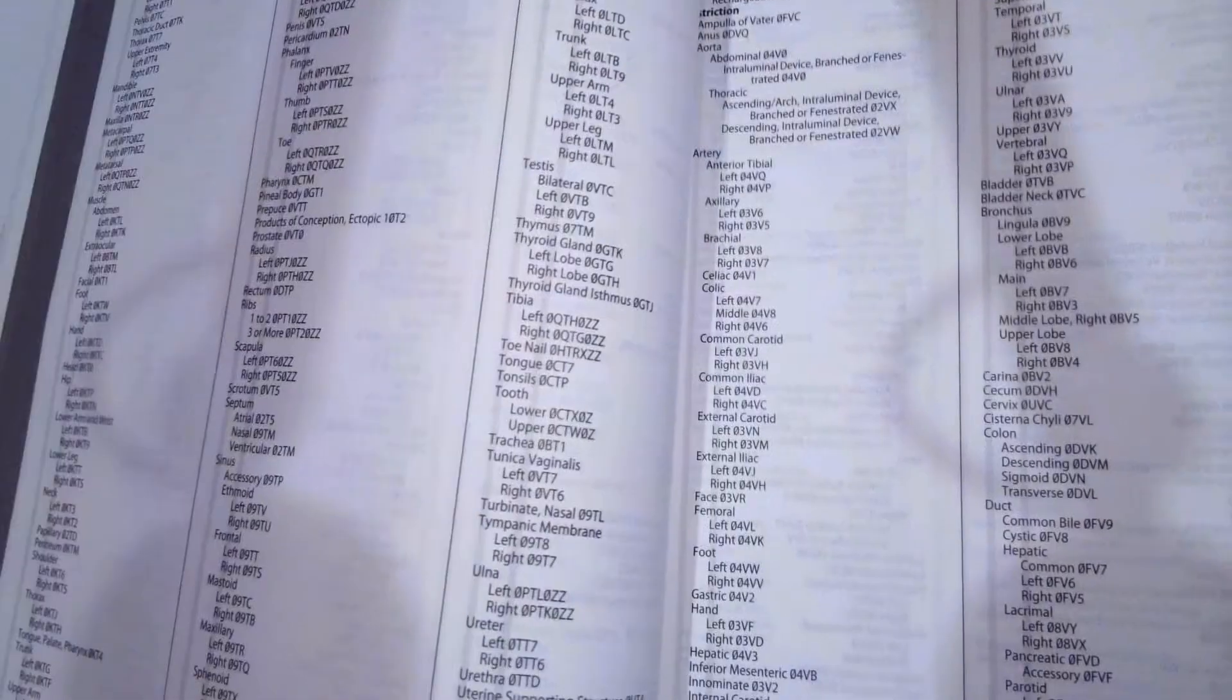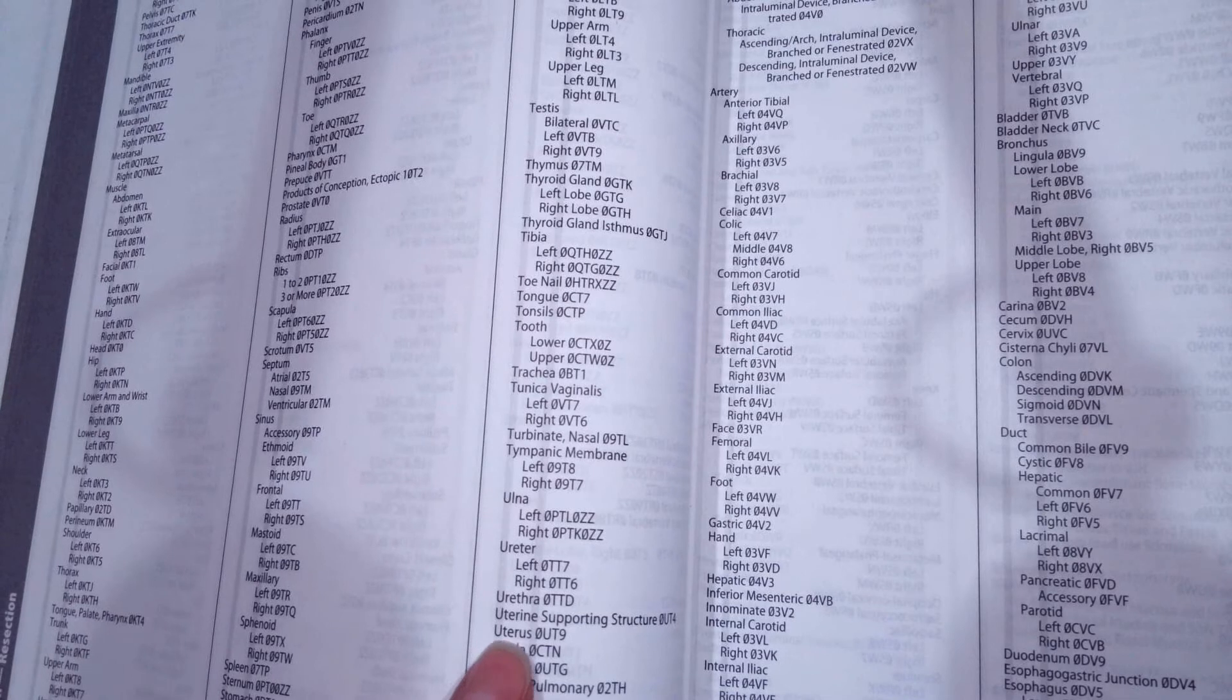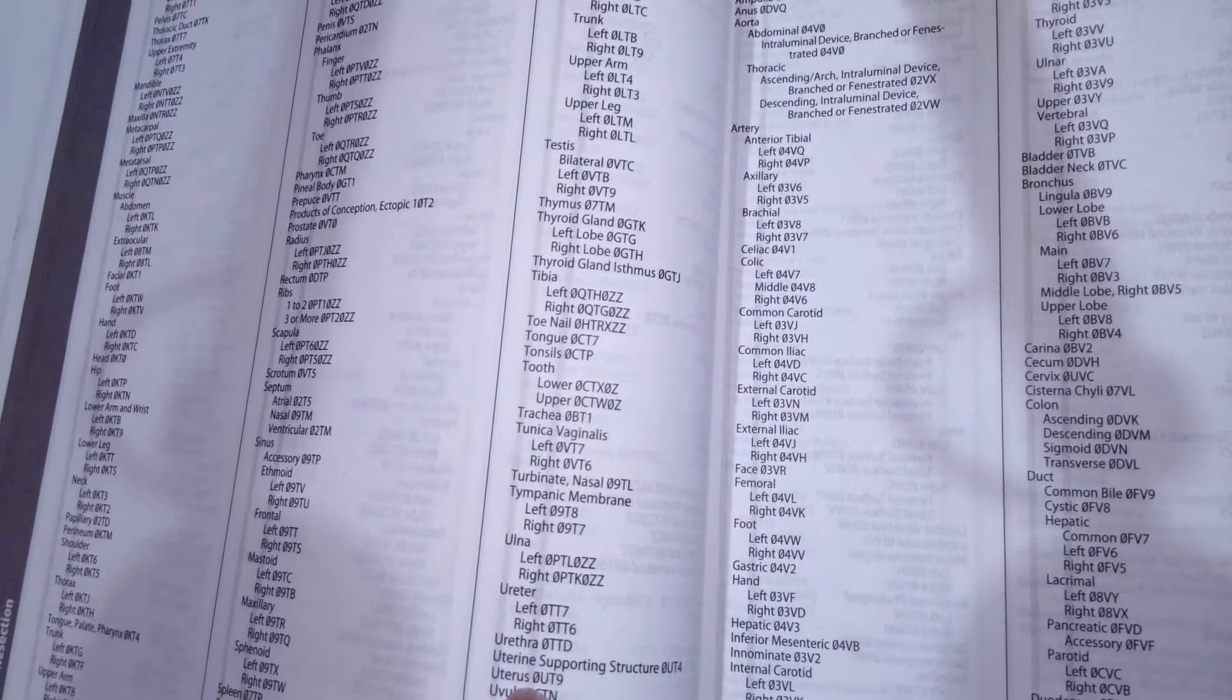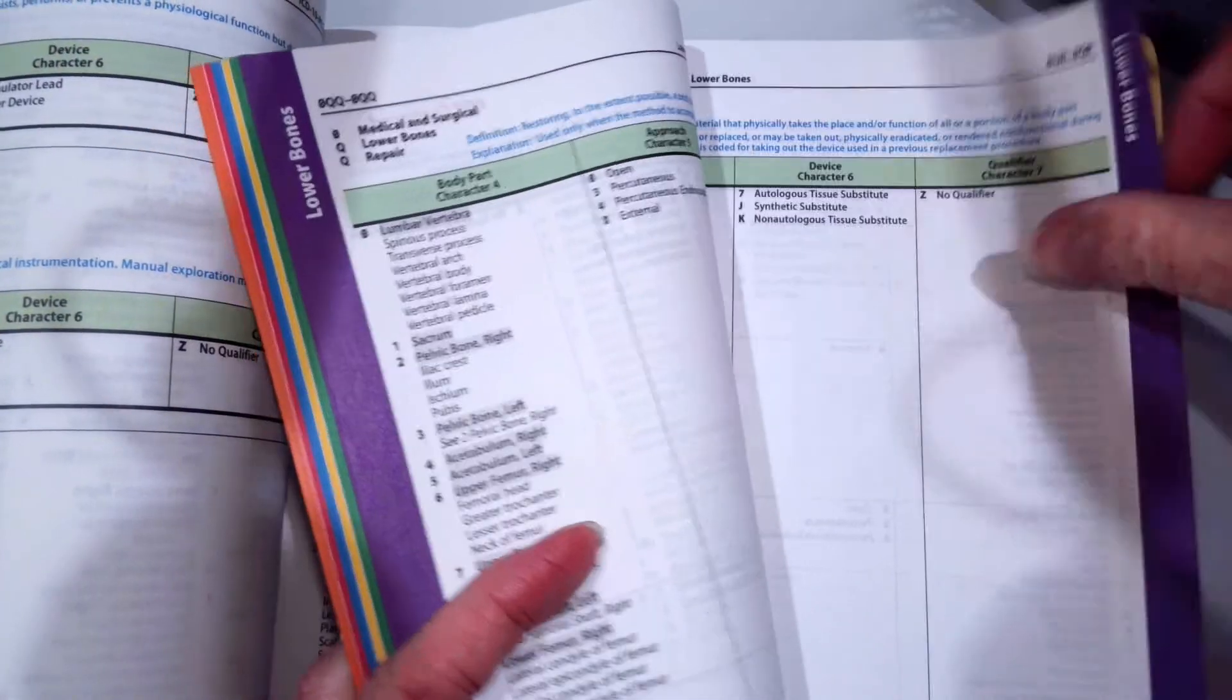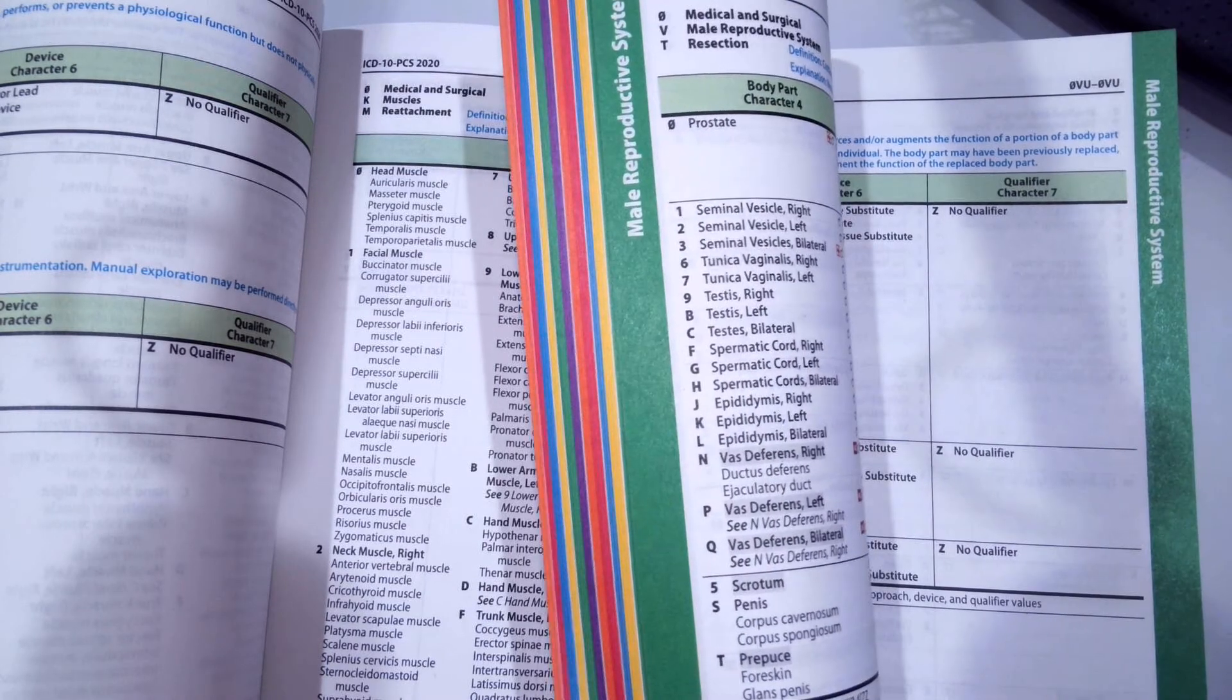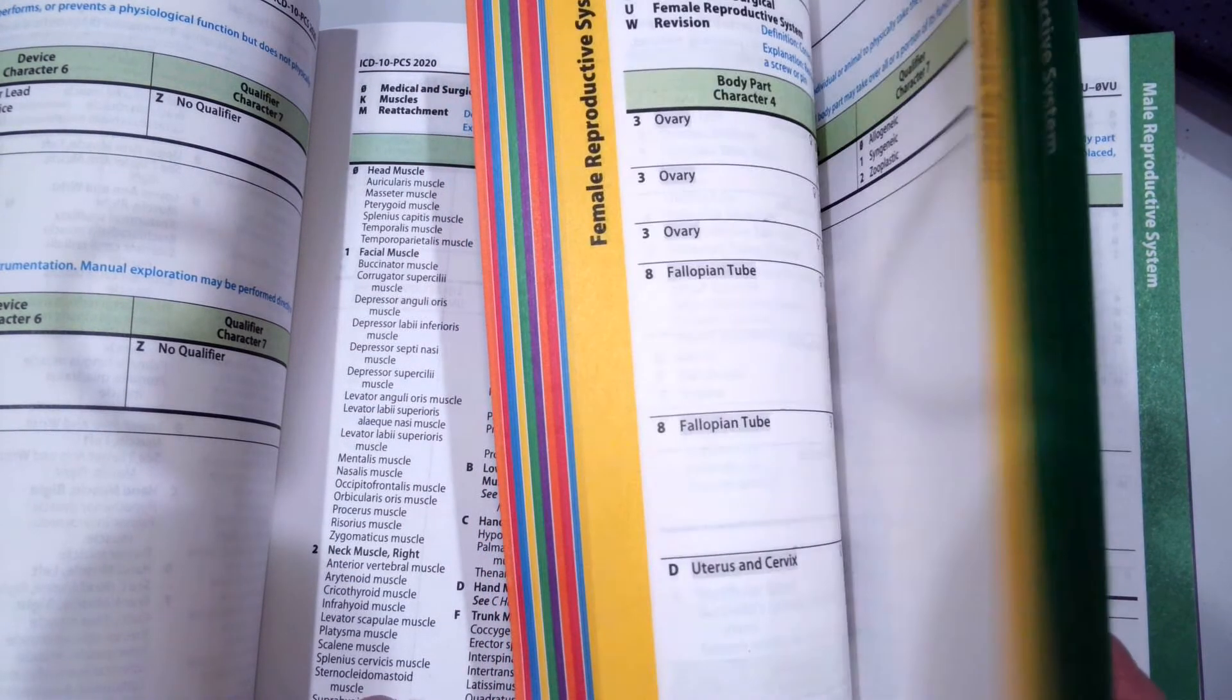Once we get to resection, we're going to go down to what body part we resected, which was the uterus. We are at 0-U-T-9. Again, I went resection, uterus, 0-U-T-9. Now, the first three characters are always our table. So we're going to go to table 0-U-T.